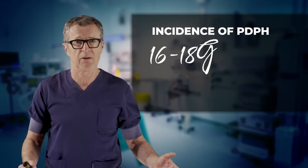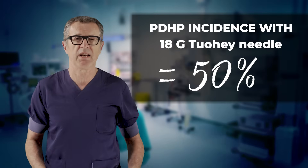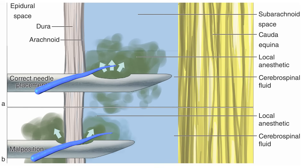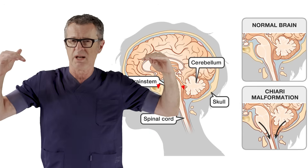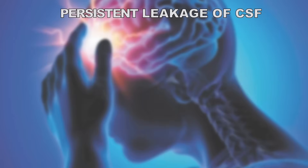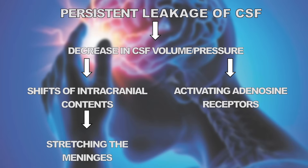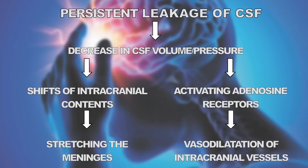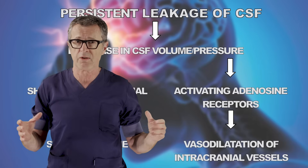Epidural needles in particular are very high risk. When an epidural needle makes its way into the subarachnoid space in young parturients for labor analgesia, the incidence of headache can be as high as 40 or 50%. The mechanism of post-dural puncture headache includes persistent leakage of CSF through the hole created by the needle. That causes a decrease in CSF pressure and volume, and as the CSF volume decreases, the brain tends to sag and stretch the meninges. This also activates adenosine receptors and causes vasodilation of the intracranial vessels, all conspiring to produce the post-dural puncture headache.